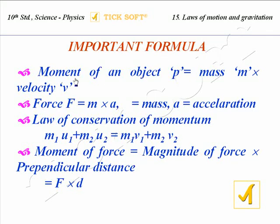Momentum of an object P is equal to mass m into velocity v. That is P equal to mv. Momentum is equal to mass into velocity, P equal to mv.